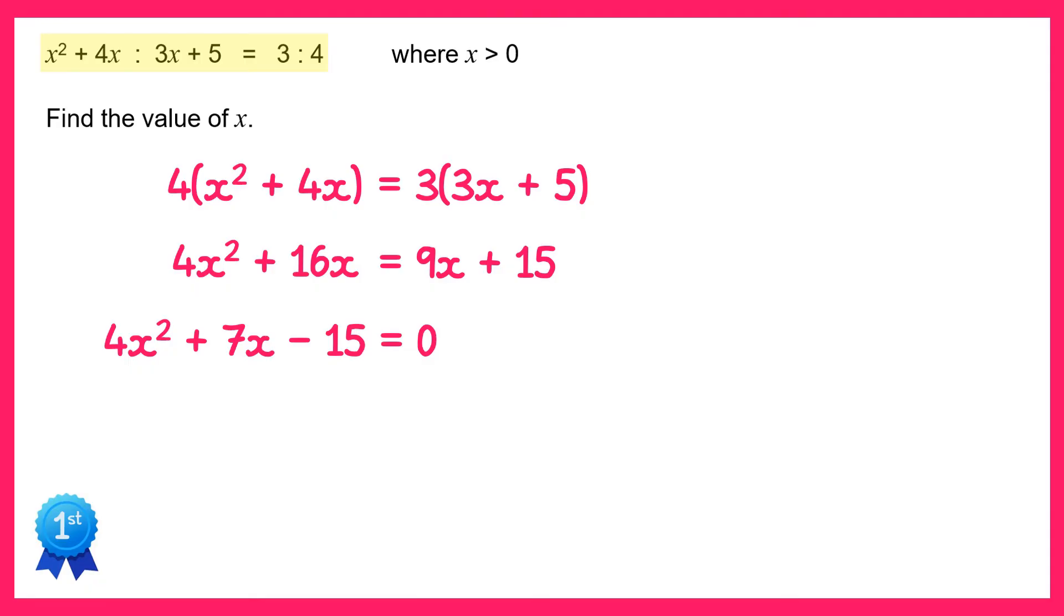This is a quadratic equation so you could use the formula, but this one also factorises. It would factorise to give 4x minus 5 and x plus 3 equals 0.